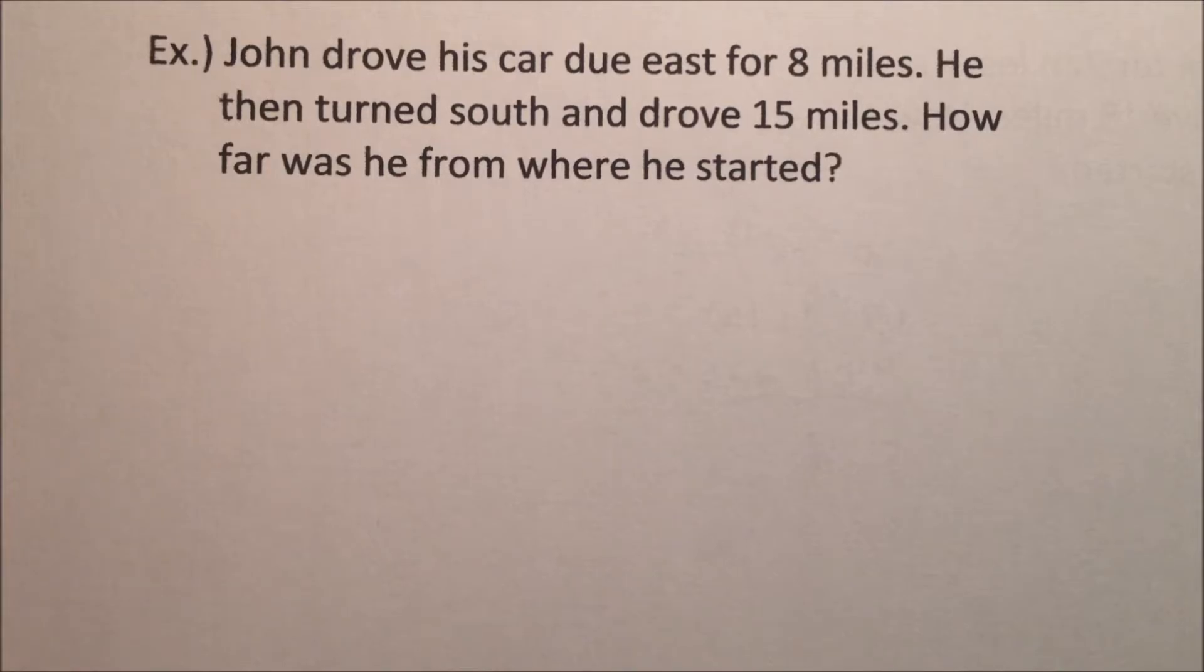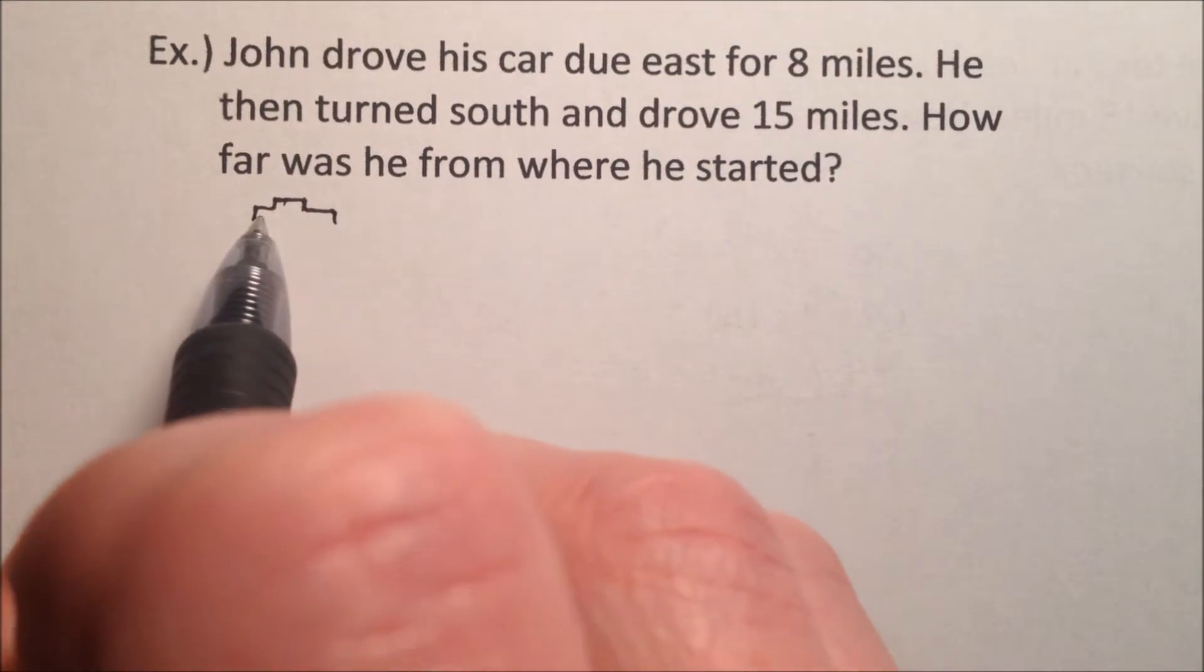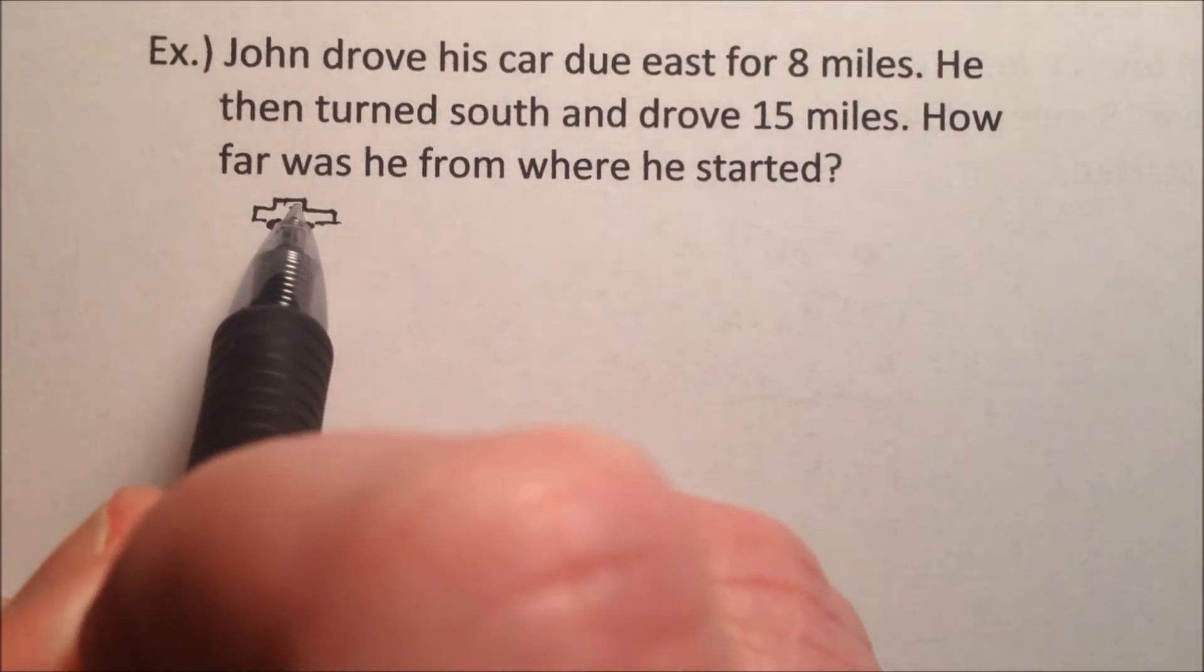In the first one, it says, John drove his car due east for eight miles. He then turned south and drove 15 miles. How far was he from where he started? Okay, well, if John's got a car, we better draw a little handy-dandy car here. Of course, not a very good one. That's okay, though.